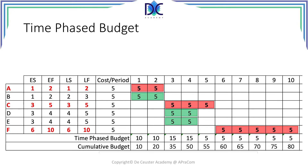In period 4 it's 15 plus 35, which is 50. In period 5 it's 5 plus 50, which is 55. At the end in period 10, the total cost of the project is 80, which is also what we call the budget at completion.